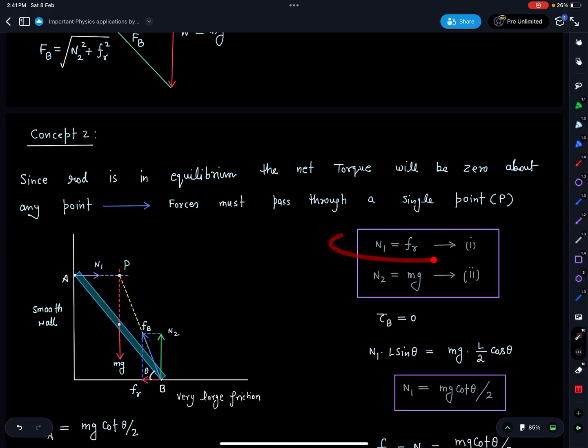Anyways, let's do some calculation. N1 is equal to friction here and mg is equal to N2, so these two are equations. Another one we can write torque equation. Best is let's take torque about this. Directly we are going to get the value of N1. So N1 into l sine theta and mg into l by 2 cos theta, that should be equal to balance the torque. So directly I am getting N1 is equal to mg cot theta divided by 2.